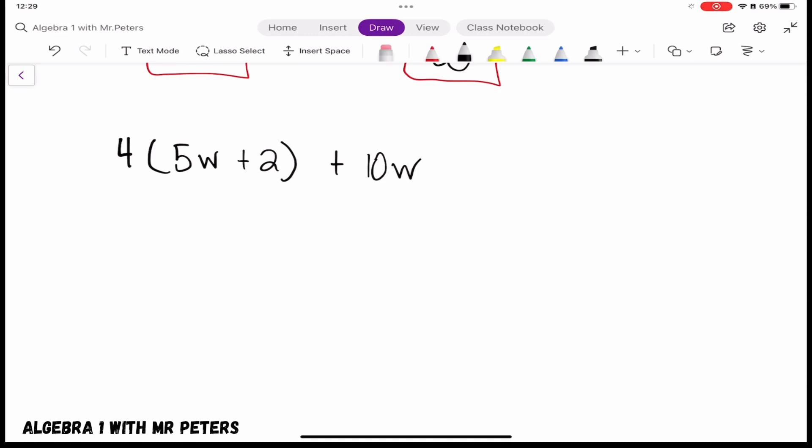So when we distribute 4, meaning we multiply by 5w and 2, we are not going to multiply 4 and 10. 10 is not inside the parentheses. So what are we going to do with 10? Let's distribute and find out.